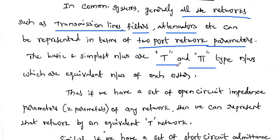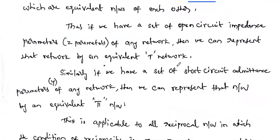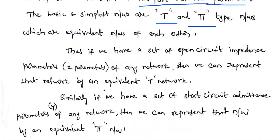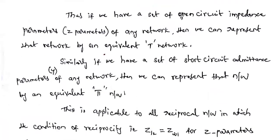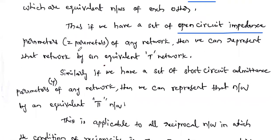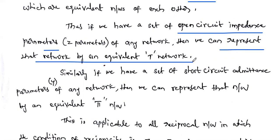So what about how to convert them, and what is the relation between the Z-parameter and the T-type impedance values — we are going to discuss. If we have a set of open circuit impedance parameters, that is Z-parameters — the Z-parameter is called the open circuit impedance parameter of any network — we can represent that particular network by an equivalent T network.